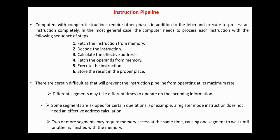Computers with complex instructions require other phases in addition to fetch and execute to process an instruction completely. In the most general case, the computer needs to process each instruction with the following sequence of steps: fetch the instruction from memory, decode the instruction, calculate the effective address, fetch the operands from memory, execute the instruction, and store the results in the proper place.